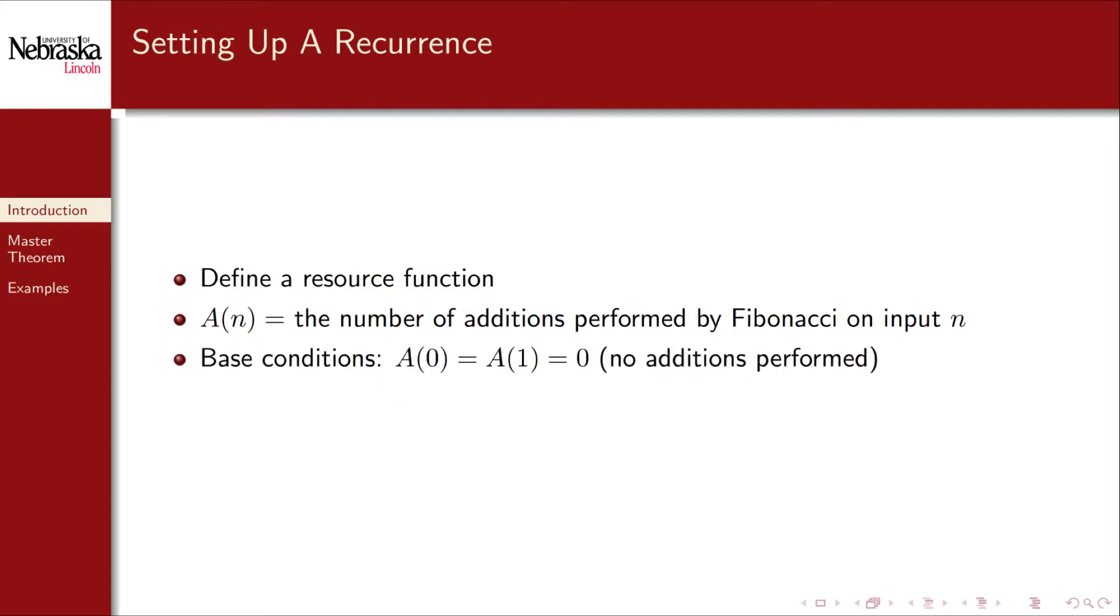Let a sub n be the number of additions performed by the Fibonacci function on an input of n. We can easily identify the base conditions. For inputs zero and one, no additions are performed, and so a sub zero and a sub one are both zero. But what about in general?